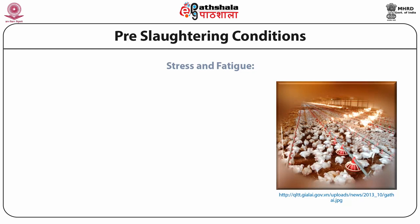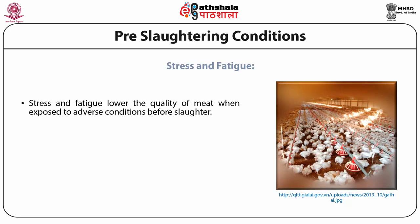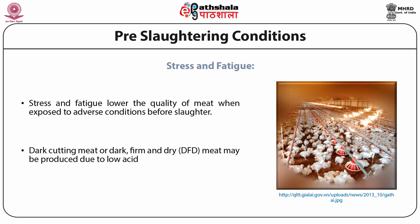When poultry is exposed to adverse conditions before slaughter, stress and fatigue lower the quality of meat due to depletion of glycogen in the muscle. Due to low acid production, the ultimate pH of the muscle remains high, causing a condition called dark cutting meat or dark, firm and dry (DFD) meat. Thus, keeping quality of meat is reduced and it looks dark due to higher water content.